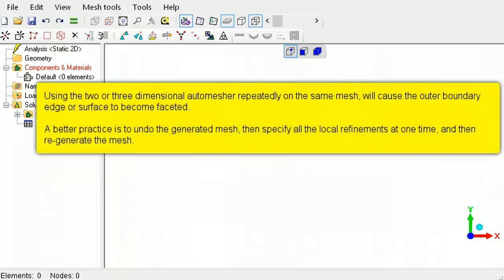If local refinements are done repeatedly using the three-dimensional or the two-dimensional auto mesher, the shape at the boundary can degrade. To prevent this from happening, use undo to restore the mesh to its previous state, then redefine the local refinements in the auto mesher and run it again.